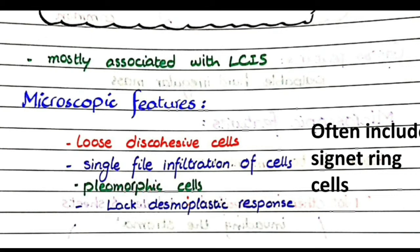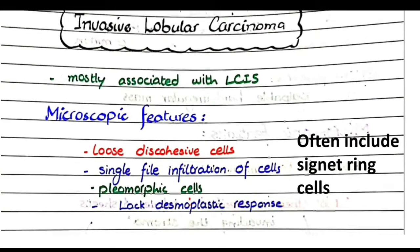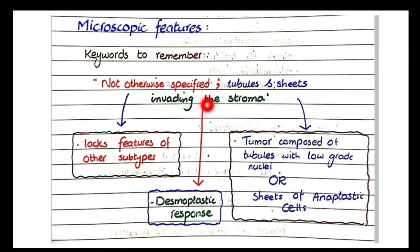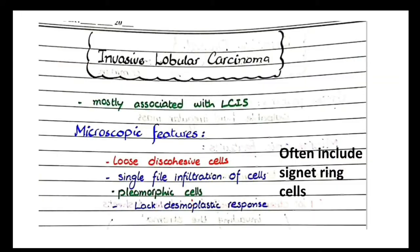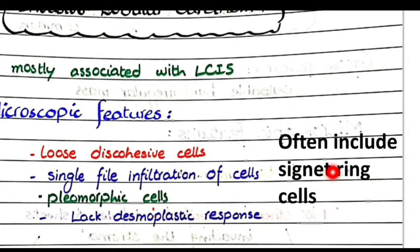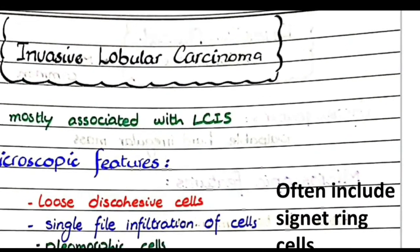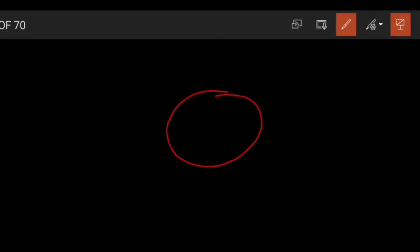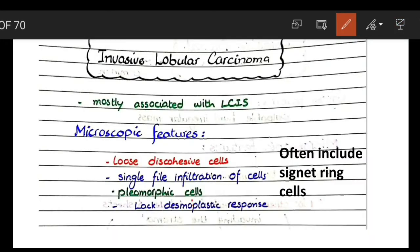Pleomorphic cells vary greatly in shape, and invasive lobular carcinoma lacks desmoplastic response. This is because the individual discohesive cells cannot induce enough proliferation of fibrous tissue. Often the morphological picture contains signet cells — cells in which the nucleus is pushed to the side and there is a large empty vacuole in the cytoplasm.